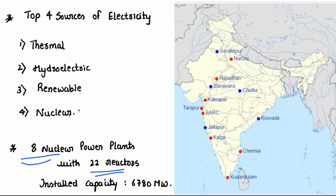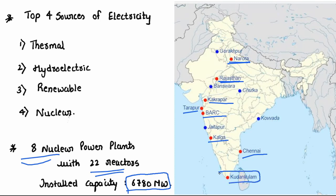The installed capacity is 6780 MW. Whatever you see in red are the ones which are active, and whatever in blue are the ones which are planned. The active ones are Narora, Rajasthan, Kakrapur, Tarapur, Baba Atomic, Kaiga in Karnataka, Chennai, and Kudankulam in Tamil Nadu. Planned ones like Jayathapur, Baswara, and others shown in blue are yet to be built.